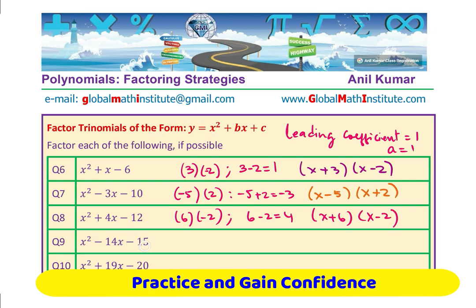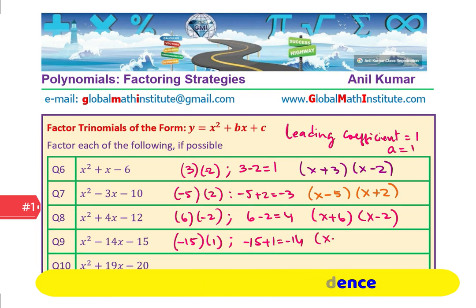Next one, we want 15 and adding these numbers, we want negative 15 and negative 14. Negative is the product means one number is positive, one is negative. 15 times what? 1. Minus 15 times plus 1 does the trick for us. Minus 15 plus 1 is minus 14. Therefore, we get x minus 15 times x plus 1.